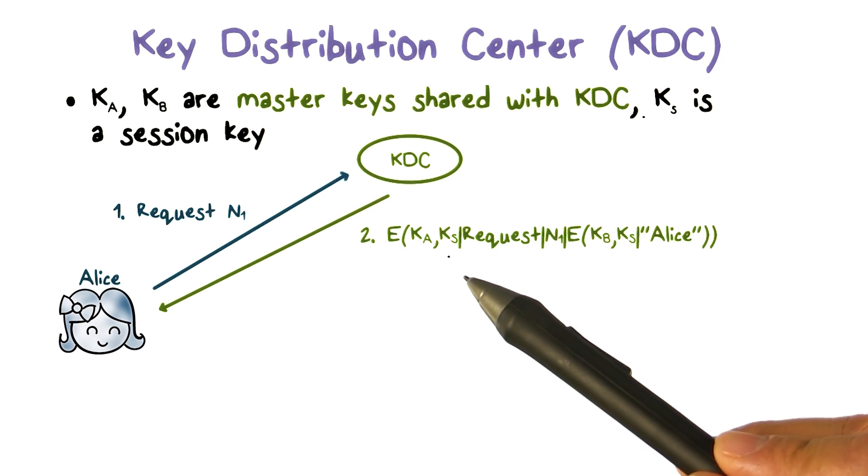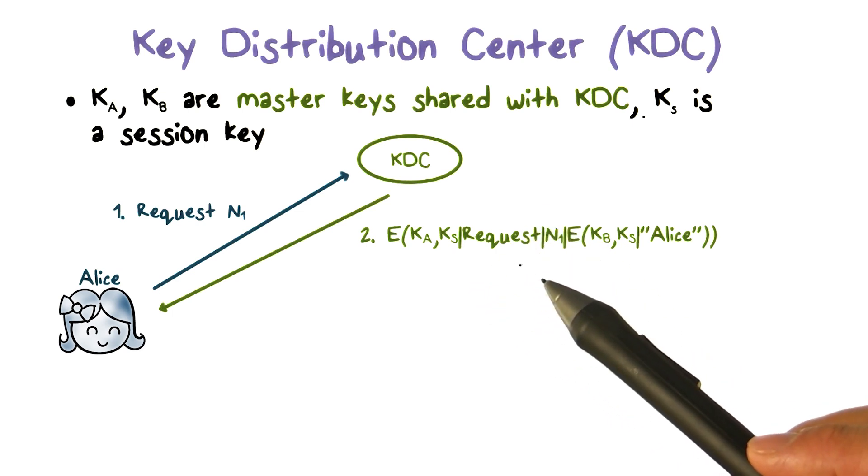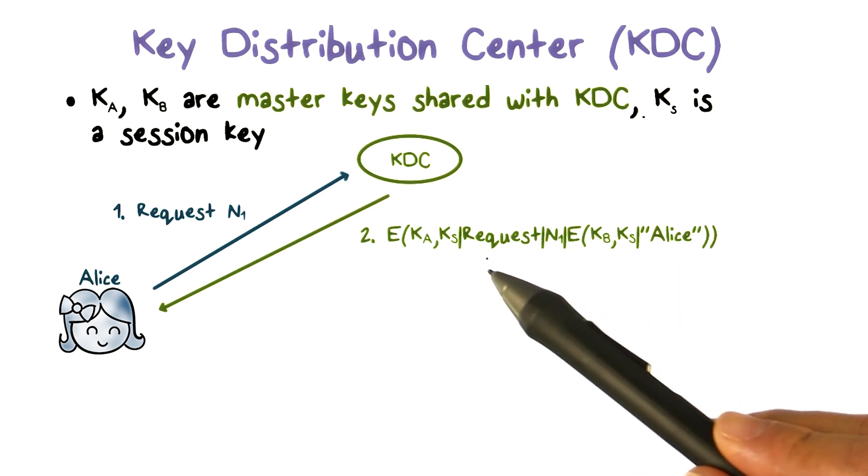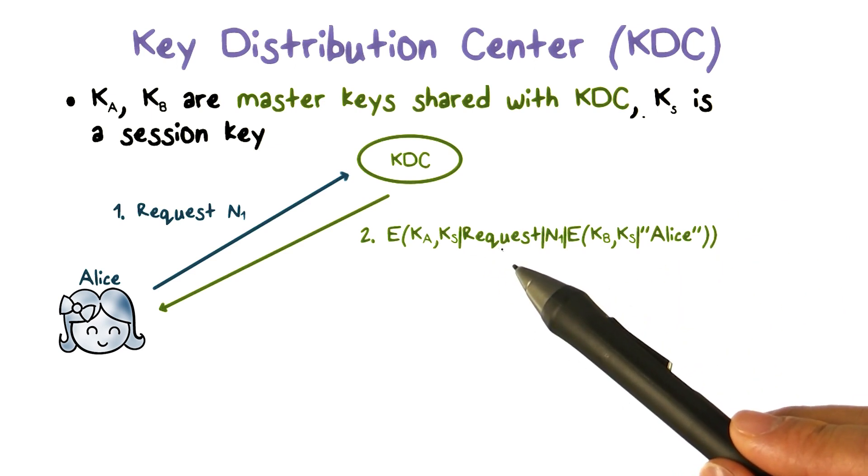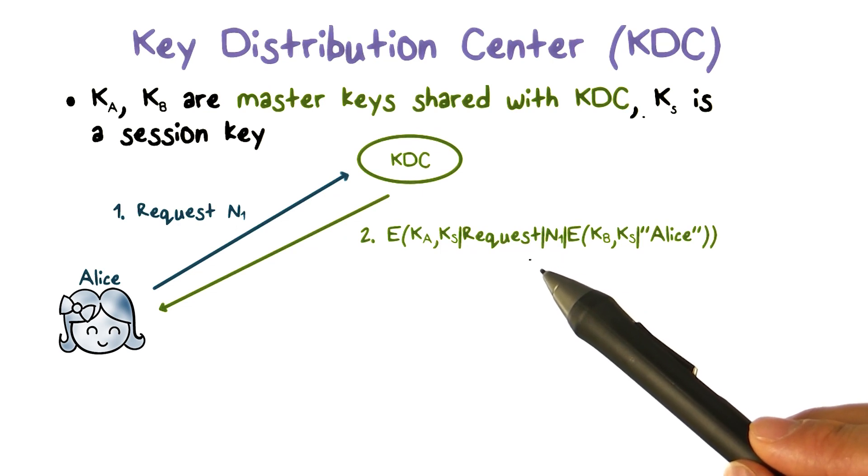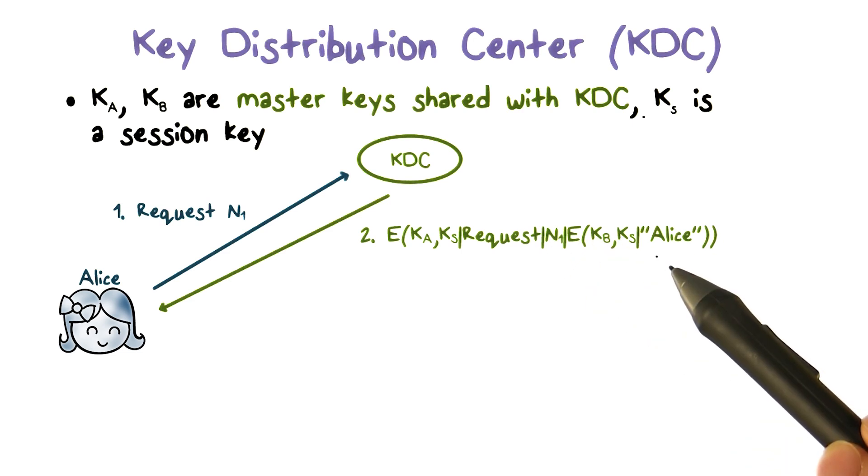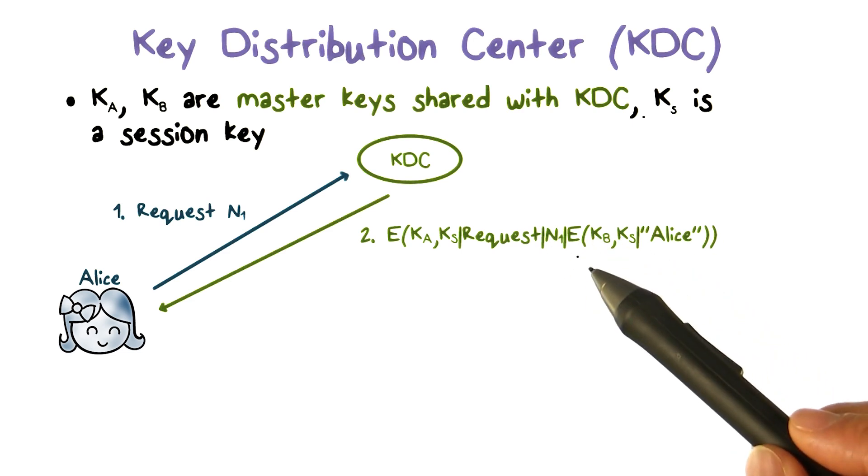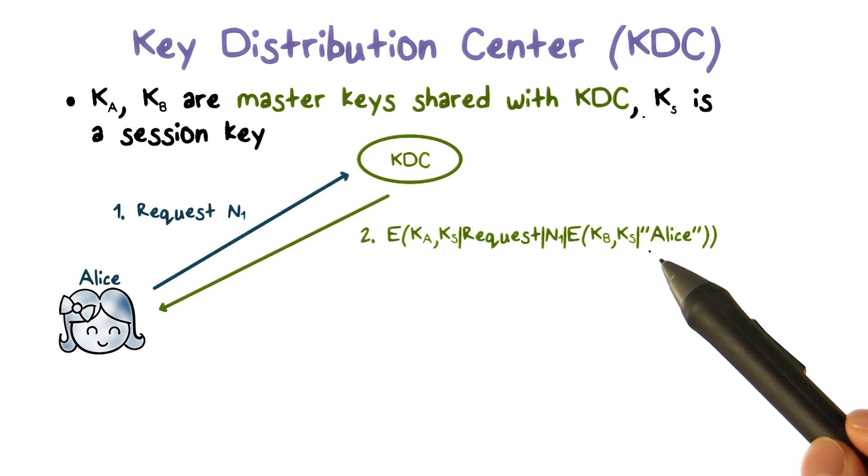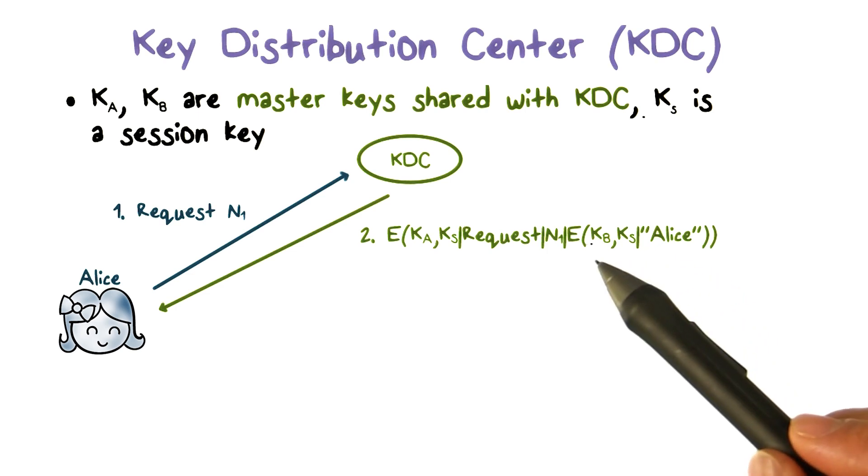This message contains the session key KS that the KDC just created for Alice and Bob to share. The message also contains the same request that Alice sent to KDC along with the same nonce value N1 and a message we call ticket. The ticket is encrypted using the master key KB that is shared between Bob and KDC, and it contains the session key KS and ID of Alice.